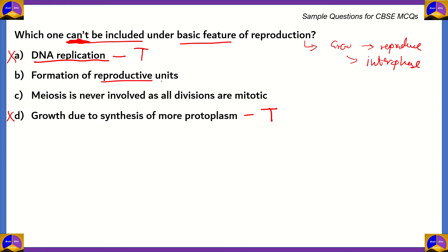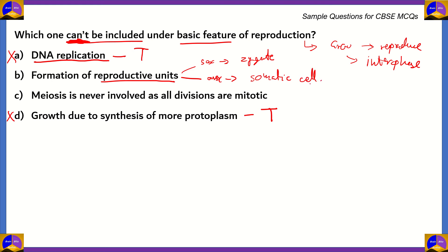What about option B — formation of reproductive units? In sexual reproduction, we have the zygote as a reproductive unit. When the gametes join together they form the zygote, and it's from the zygote that a new life starts to form. In asexual reproduction, you have the somatic cell which divides, and that can be considered a reproductive unit. So in both cases we have formation of reproductive units, meaning option B can also be included as a basic feature — it is also incorrect as our answer.